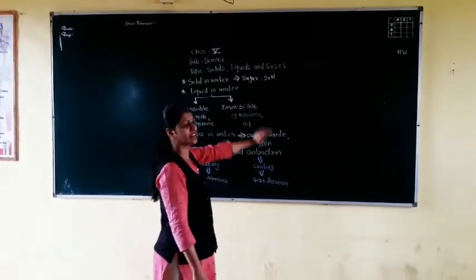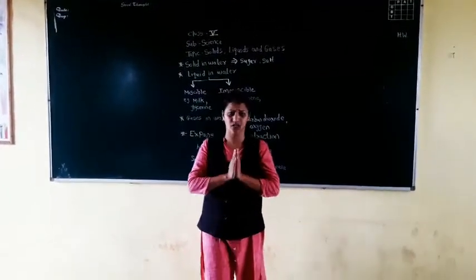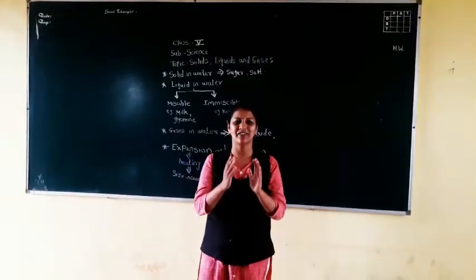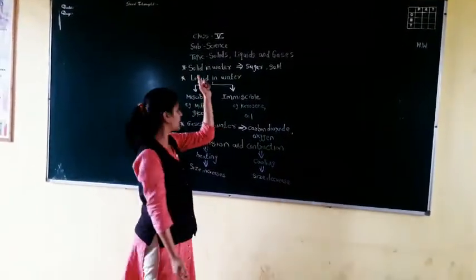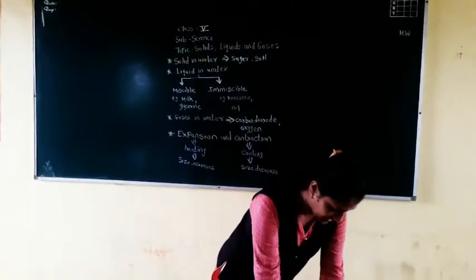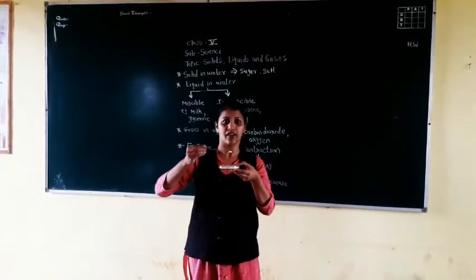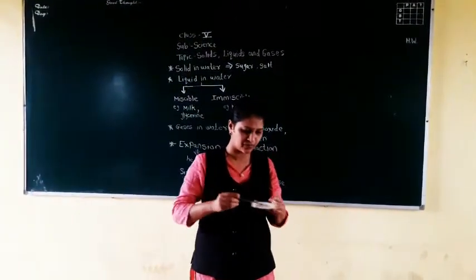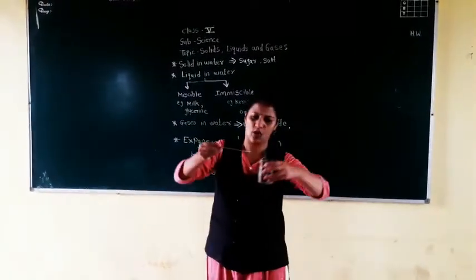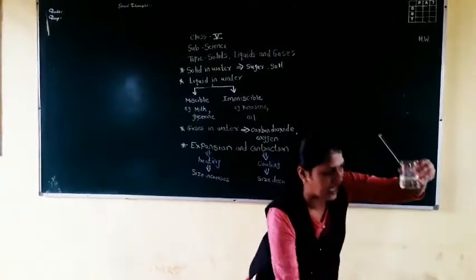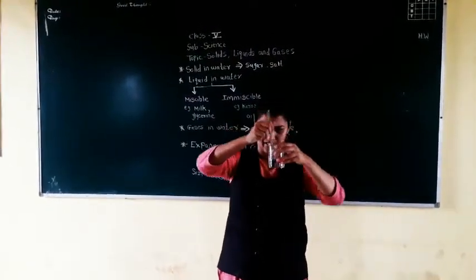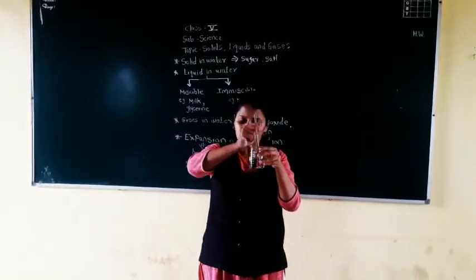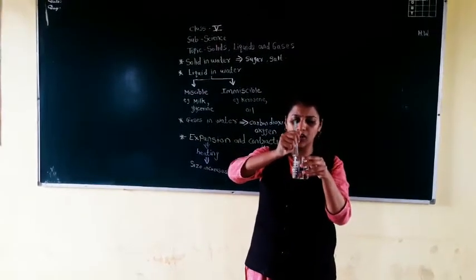First is solid in water. There are some substances — sugar and salt. Let's start with the practical. This is the sugar. Can you see? It is in the solid state. Now I am going to add the sugar into this water. Stir it. The molecules of the sugar will get dissolved in the water.